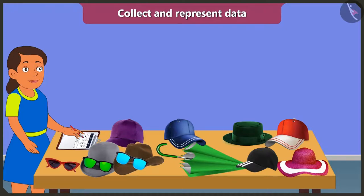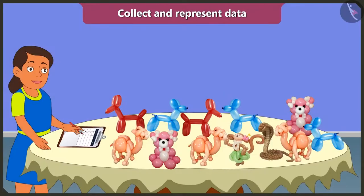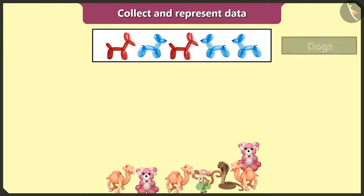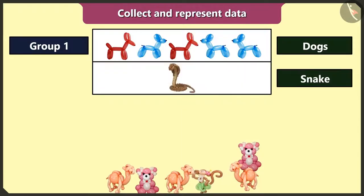My birthday is approaching, so I will collect data about the types and how many balloons I have, so I can gift them to all my friends who will be coming to my birthday party. First of all, I will make groups of similar animal-shaped balloons — first group of dog-shaped balloons, second group of snake-shaped balloons.